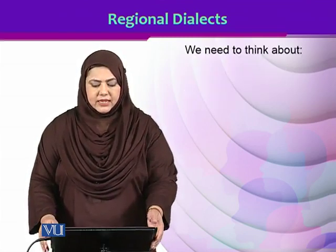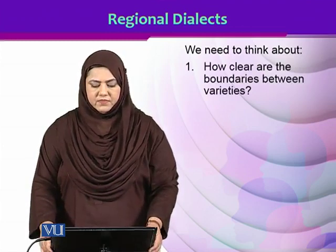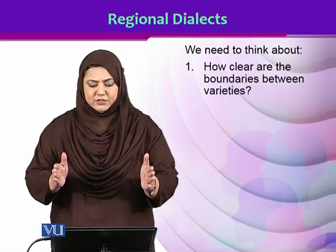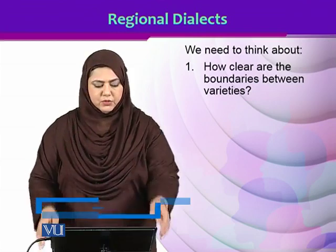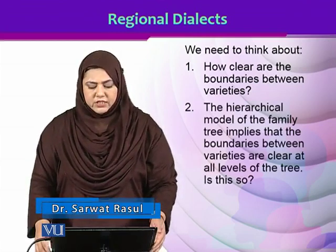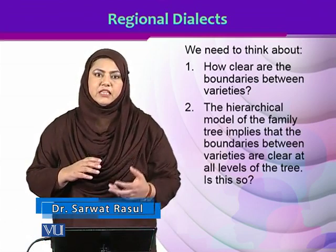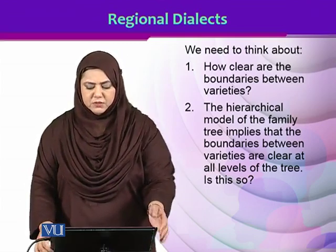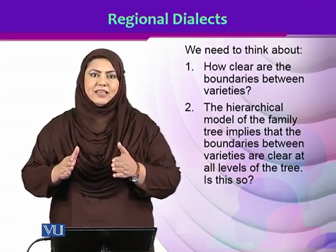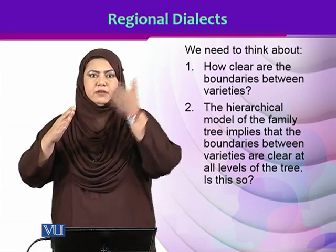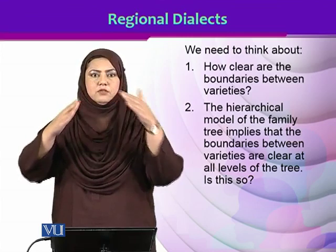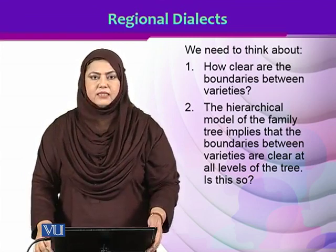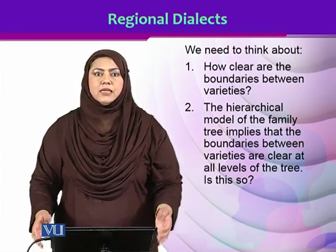My dear students, at the outset we need to think about how clearly the varieties are differentiated, or how clear are the boundaries between the varieties. We also need to think about the hierarchical model of the family tree. The family tree model implies that the boundaries between varieties are clearly drawn. Every variety is shown linked to this tree through a node and is clearly segregated from the other variety. But we need to think about the real life situation — is it actually so?